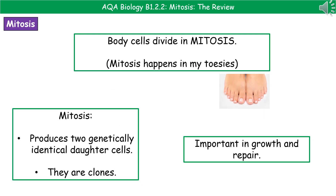Before we come on to the actual process of mitosis, we should understand where this happens. The key thing to remember is that mitosis is how our normal body cells divide. A useful way to remember this is: mitosis happens in mitoses. Also, spelling is critical here because mitosis is very similar to another process we'll come on to later in biology, so make sure you know how to spell it.